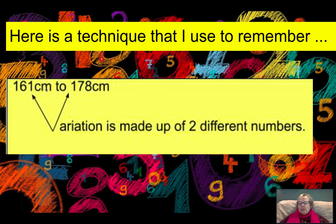So I take the variation with the word variation and make it into the V into two arrows. And each arrow is pointing to one of the numbers in variation. So I can remember that variation is made up of two numbers, whereas range is only made up of one.